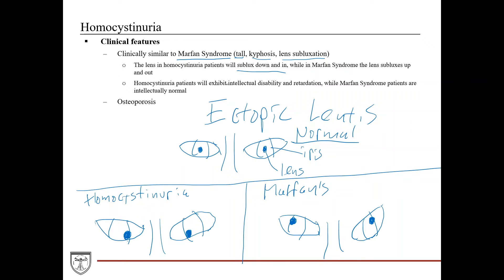Also, homocysteinuria patients will exhibit intellectual disability and intellectual retardation, in comparison to Marfan syndrome patients who are typically intellectually normal. Homocysteinuria patients can also have osteoporosis.